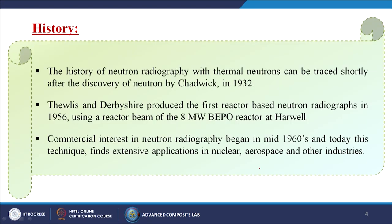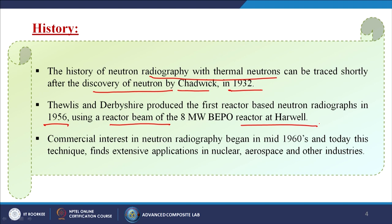The history of neutron radiography with thermal neutrons can be traced shortly after the discovery of the neutron by Chadwick in 1932. Devils and Derbyshire produced the first reactor-based neutron radiographs in 1956 using a reactor beam of the 8-megawatt BEPO reactor at Harwell. Commercial interest in neutron radiography began in the mid-1960s, and today these techniques find extensive applications in nuclear, aerospace and other industries.